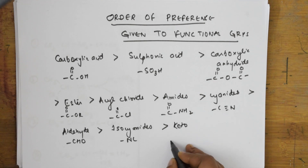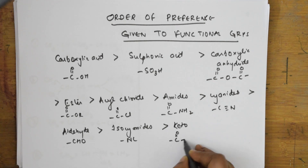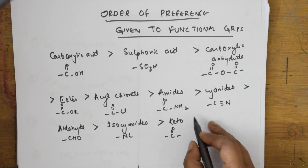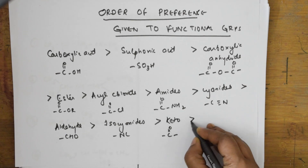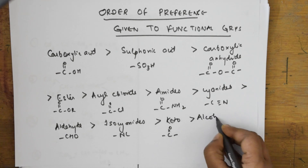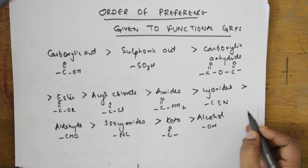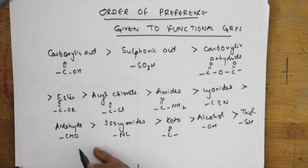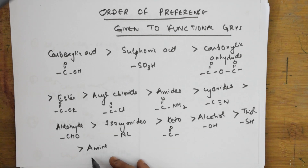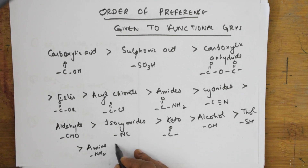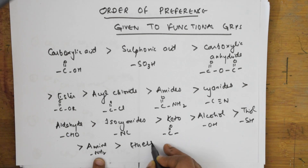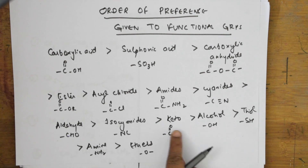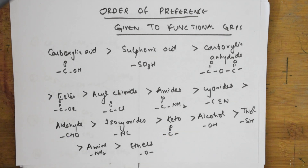After aldehydes, you give preference to isocyanides, formula NC. After isocyanides, you give preference to ketones — on either side you have alkyl groups with C double bond O. After ketones, preference goes to alcohols (OH), then thiols (SH), then amines (NH2), and finally the last preference is for ethers (OR).